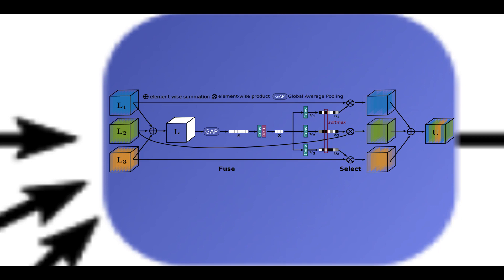The selective kernel feature fusion module performs dynamic adjustment of receptive fields via two operations, FUSE and SELECT. The FUSE operator generates global feature descriptors by combining the information from multi-resolution branches. The SELECT operator uses these descriptors to recalibrate the feature maps of different streams followed by their aggregation.